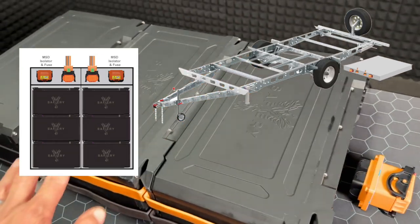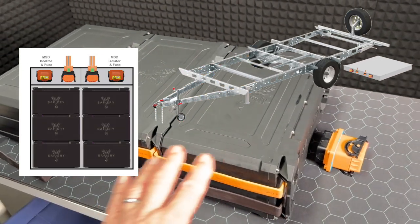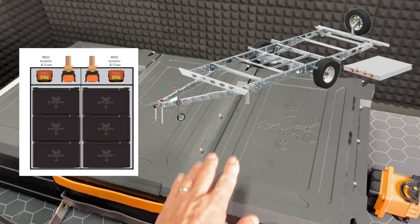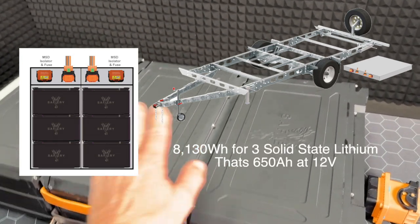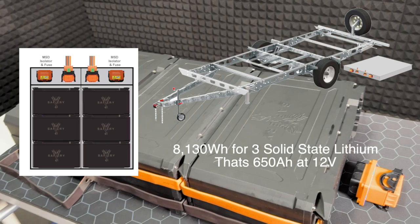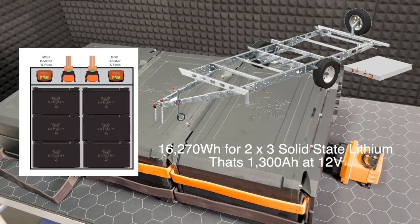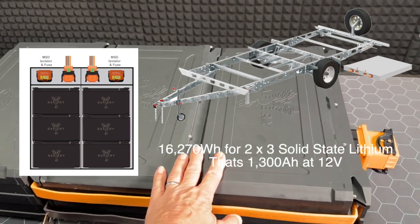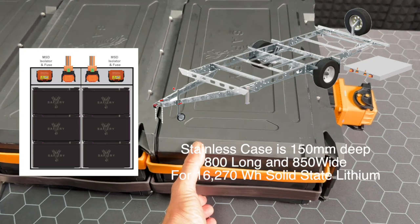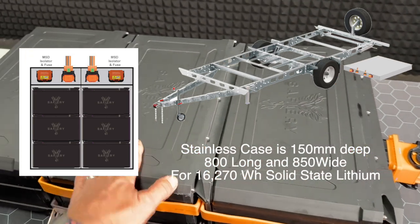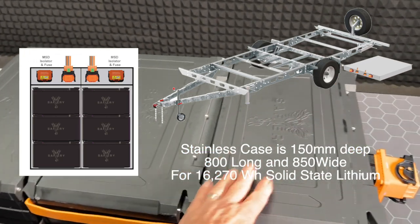The capacity you're looking at here is over 8,000 watt hours. Two of these side by side gives us 16 kilowatt hours—a very good number for a caravan. Only 150mm deep.